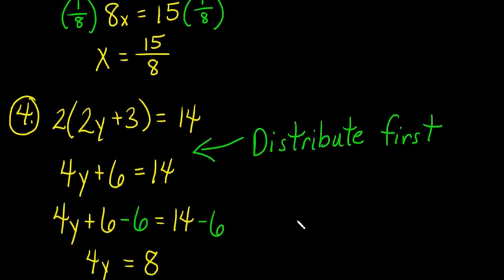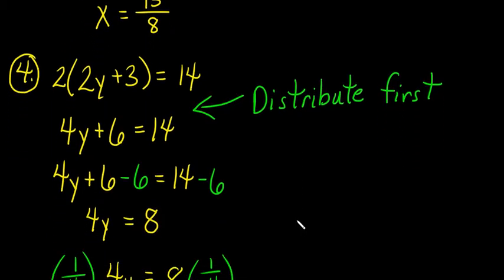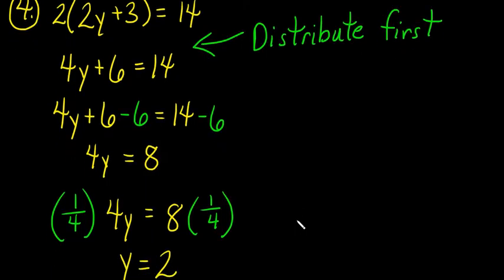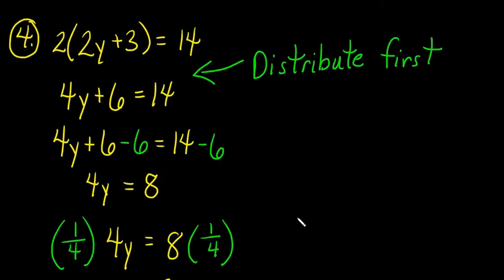Number 4, we've got a 2 times 2y plus 3, all that in parentheses, equals 14. So, I notice I'm going to have to distribute first before I do anything else. So, I'm going to distribute my 2 across. So, I have 4y plus 2 times 3 is 6 equals 14.